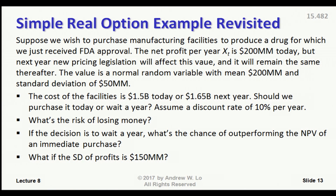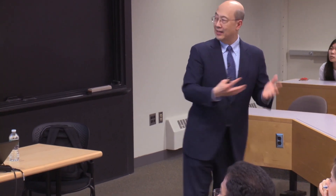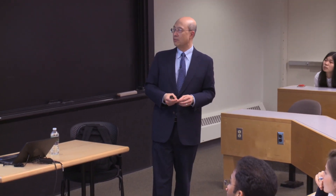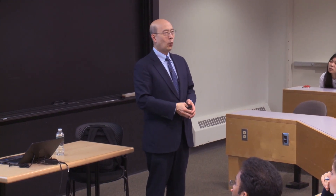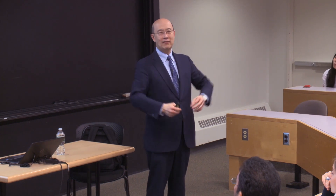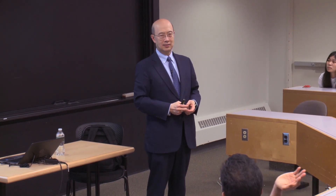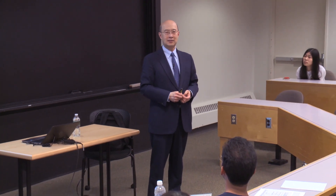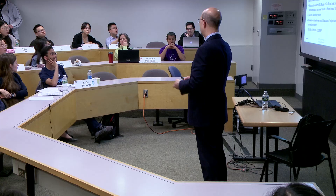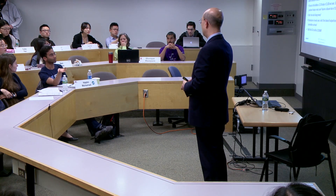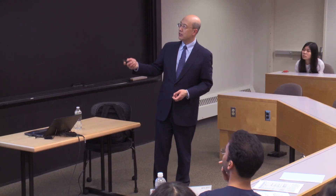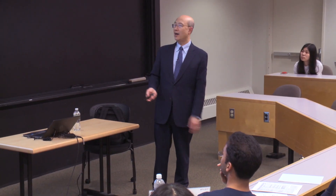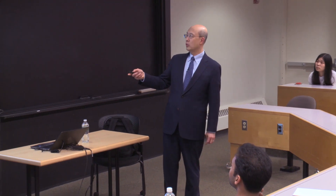So just back of the envelope: 95% of the time, what will the profits likely be? Between $100 and $300 million. How do you get that? You multiply the standard deviation by almost 2 — specifically 1.96 — so two times $50 million is $100 million. You know that about 95% of the time, profits will be between $100 and $300 million.